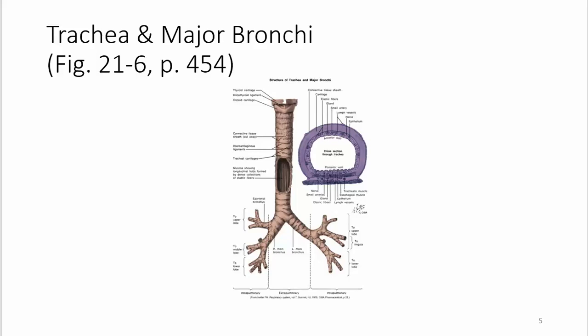In the upper part of the bronchial tree — from the trachea and the major bronchi — we have cartilage that keeps the air passages open. As we get further down the tree into smaller bronchioles, we get more and more smooth muscle and less and less cartilage. The cartilage becomes less structured and the amount of smooth muscle goes up.